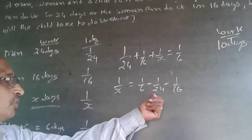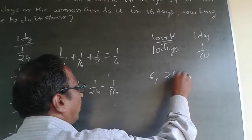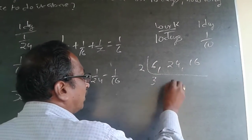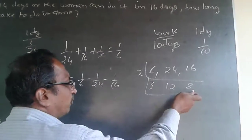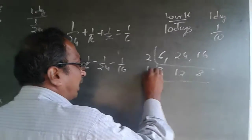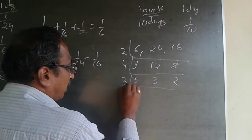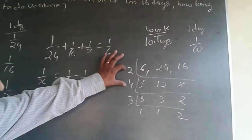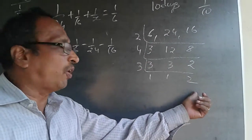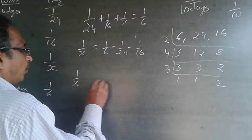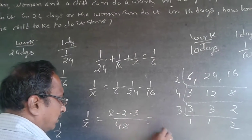Let us find the LCM of 6, 24, and 16. Divide by 2: get 3, 12, 8. Divide 12 and 8 by 4: get 3, 3, 2. Divide 3 and 3 by 3: get 1, 1, 2. LCM = 2 × 4 × 3 × 2 = 48. So 1 by x equals (8 minus 2 minus 3) by 48, which is 3 by 48.